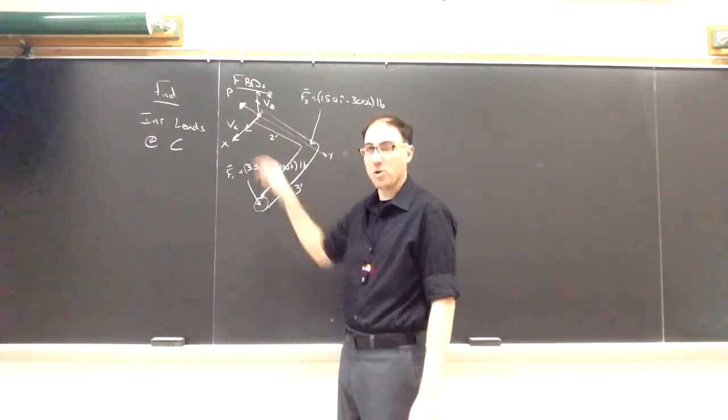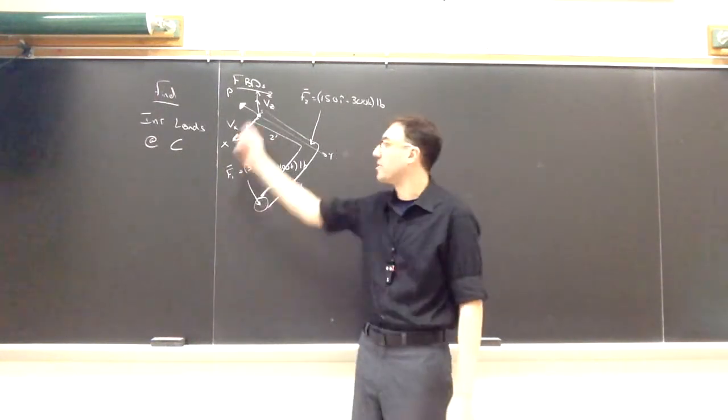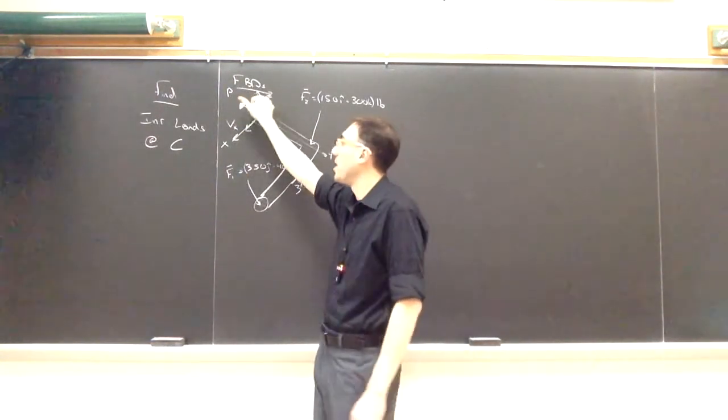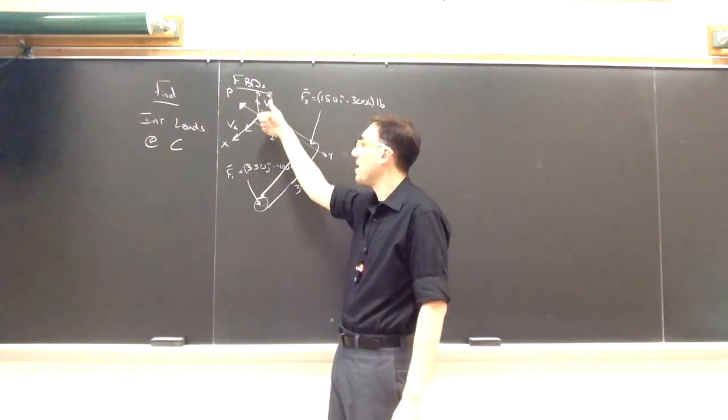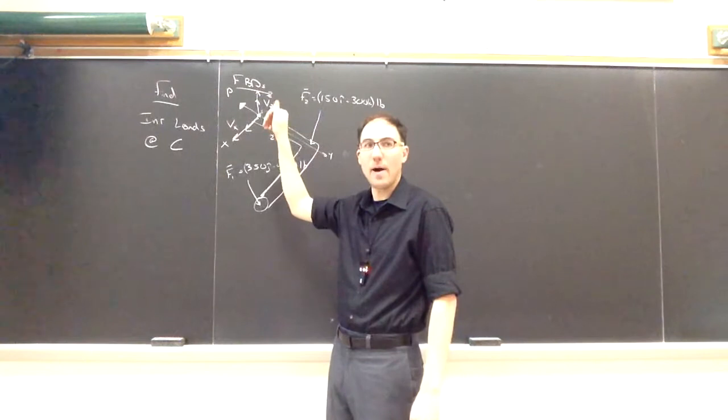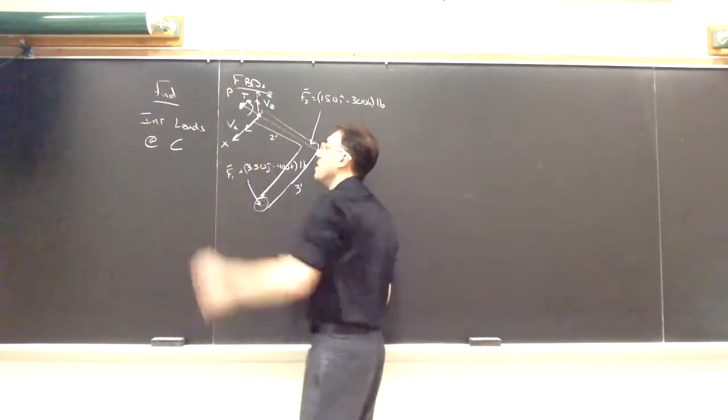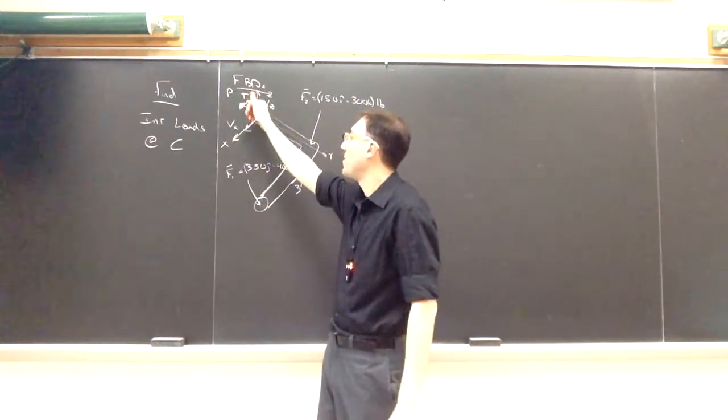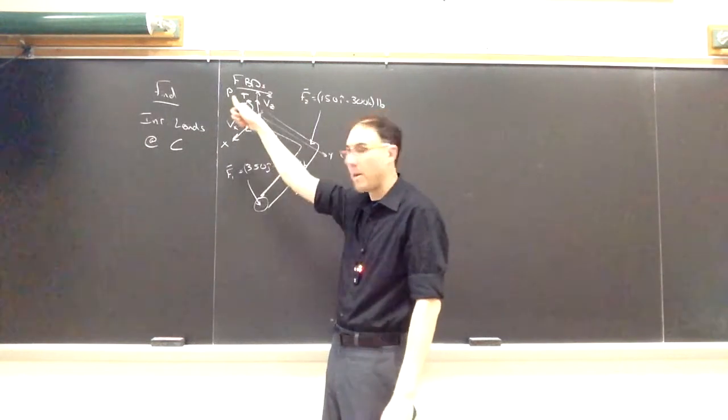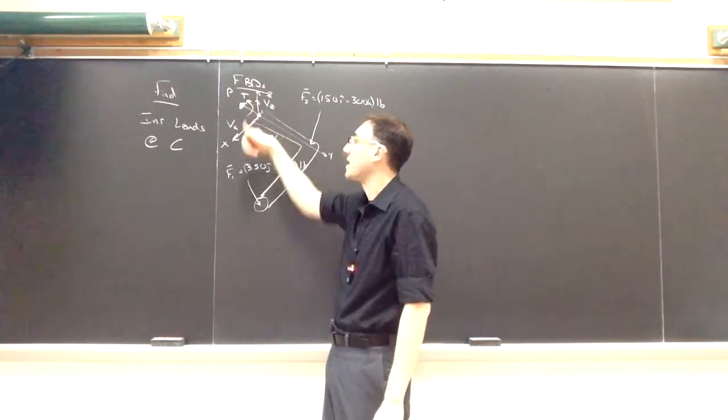I'll start with the internal torsion. Again, its direction is going to be based on the direction of P. So if I put my thumb along the direction of P with my right hand, then the way that my fingers go is going to be how I assume the direction of T is. So I'm assuming that internal torsion is positive around that P-axis, which is parallel to the negative y-axis, or in the same direction as the negative y-axis.